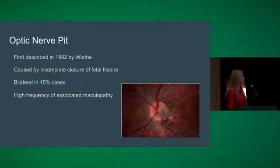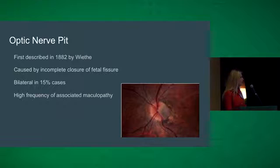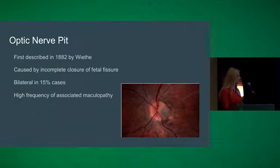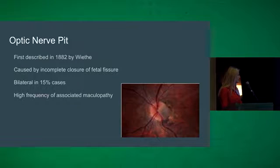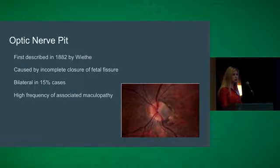So what is an optic nerve pit? It was first described in 1882 by Weath, who had a patient with bilateral optic nerve depressions. It's believed to be caused by incomplete closure of the fetal fissure. It can be bilateral in up to 15% of cases, and is very rare in the general population with an incidence of about 1 in 11,000 people, but it's clinically relevant because of the high frequency of associated maculopathy that causes visual deterioration, usually presenting for the first time in younger patients.